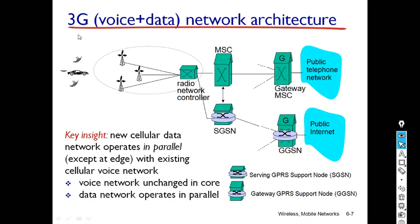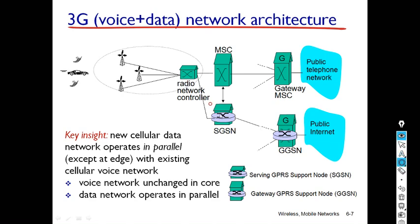In the diagram you can see the 3G voice and data network architecture. The 3G core network connects to the mobile user, the data radio service network, and the radio service network.